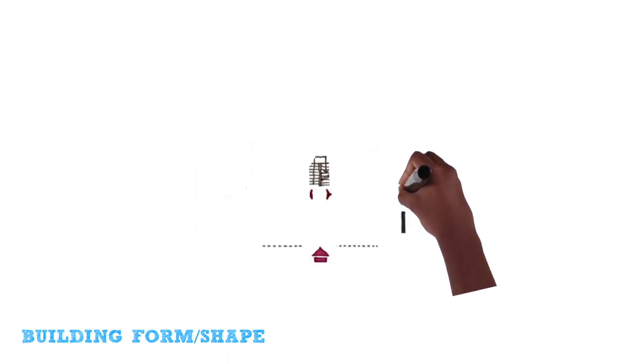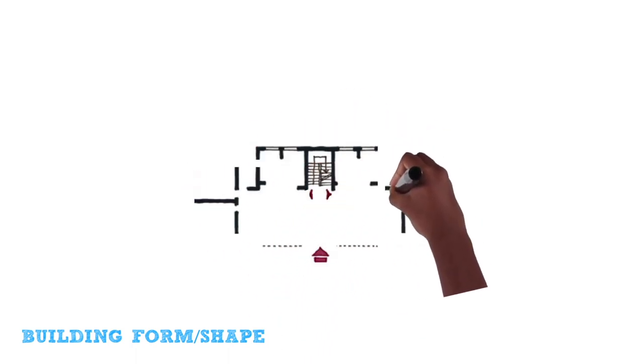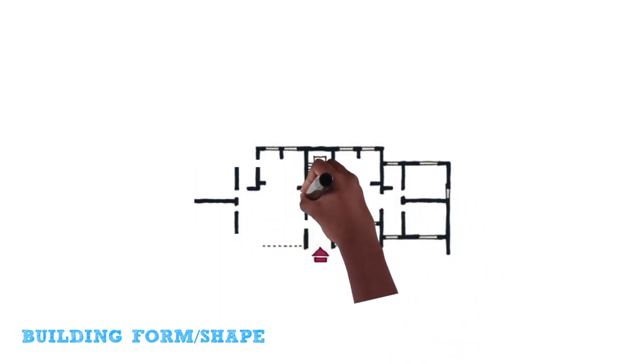Design buildings to be narrow in plan because they are easy to light and ventilate naturally, especially for hot and humid climates.